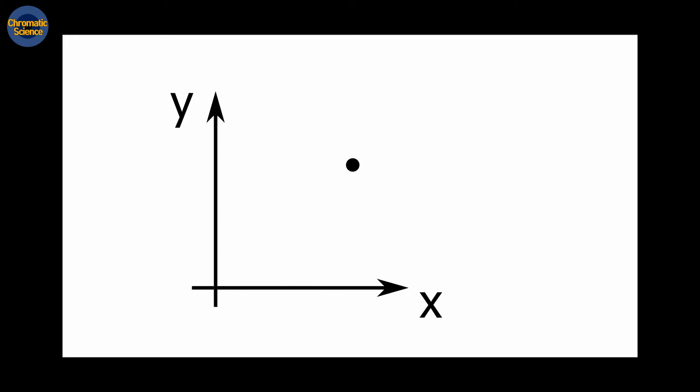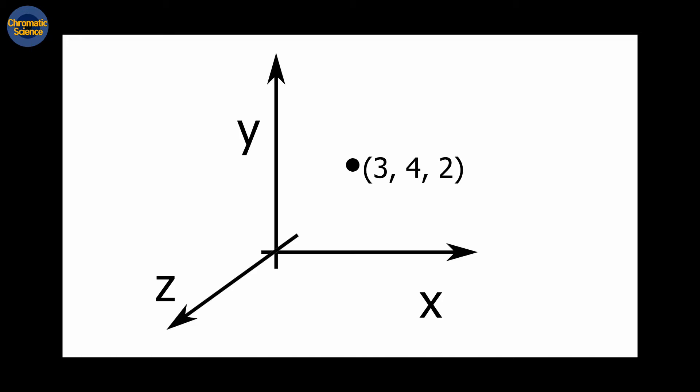Let's consider a plane. On it, we have a point. You can express its location using two numbers in the xy coordinates. Therefore, the planar space has two dimensions. Likewise, we can explain 3D space. In 3D space, we can show the location of a point using three numbers.